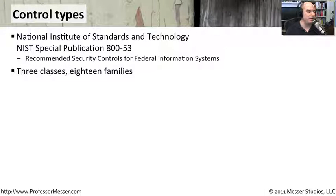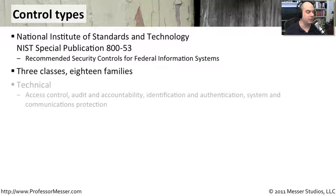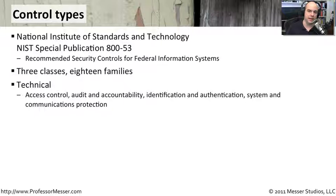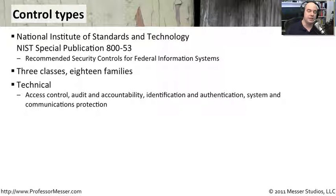Inside this document are what they call three classes and 18 different families categorized within those classes. The first class is called Technical Control Types. You can think of this as things like access control — how you authenticate onto the different resources on your network or computer, how you protect your systems, how you protect your communications. All of those technical aspects of control are related in that particular technical class.